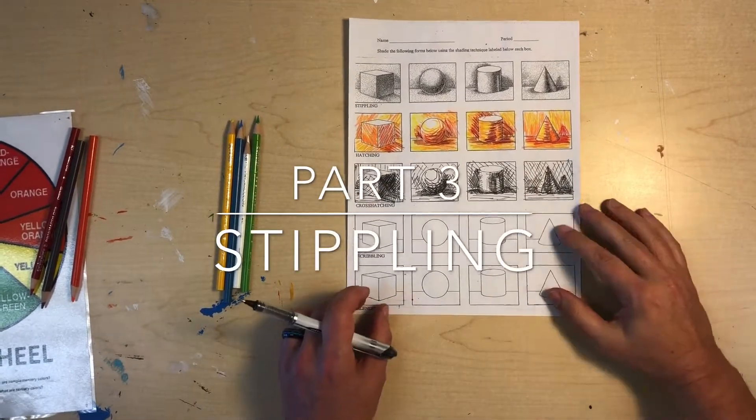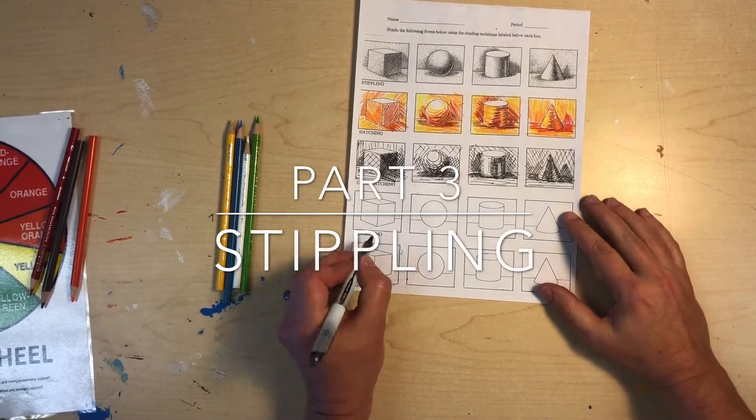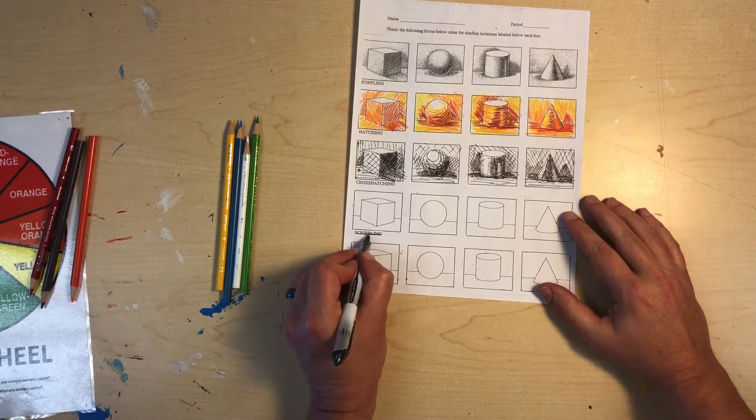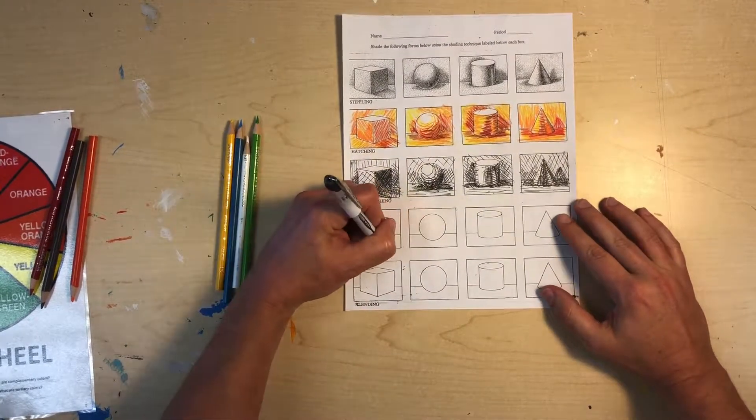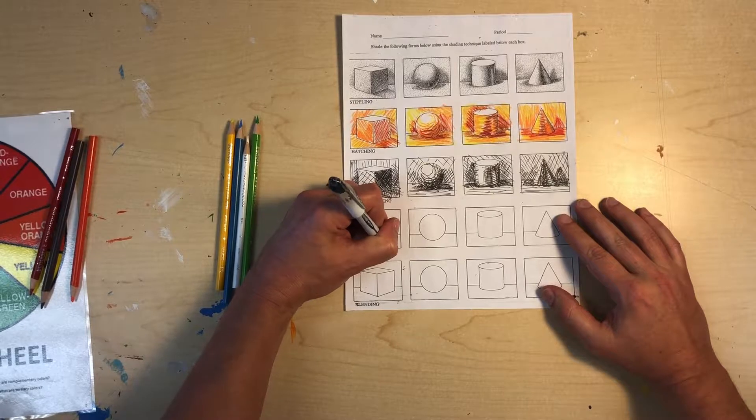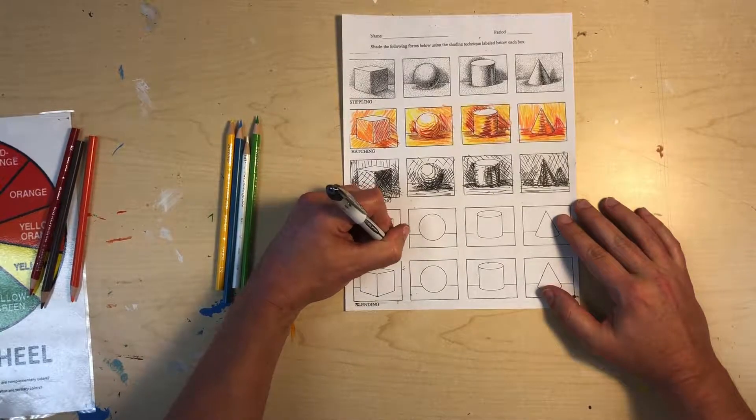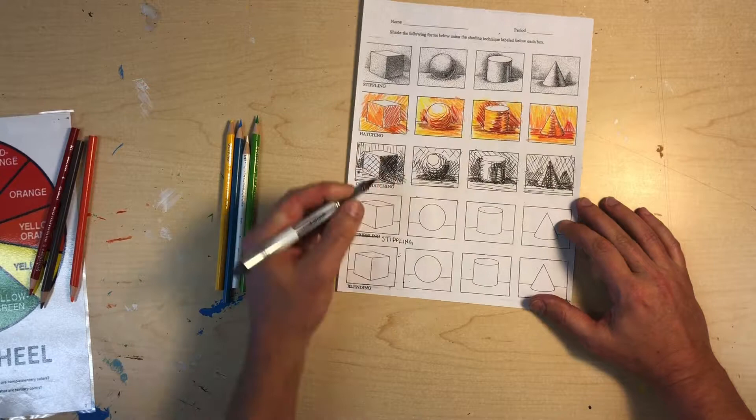Okay, for the next one it says scribbling but we're actually gonna mark that out. We're actually gonna do a stippling one or at least what looks like stippling. So I'm just gonna write in stippling down here.